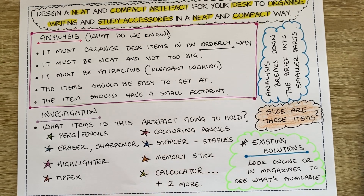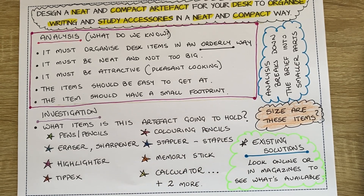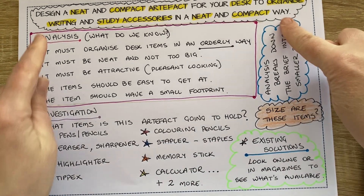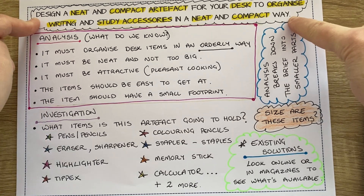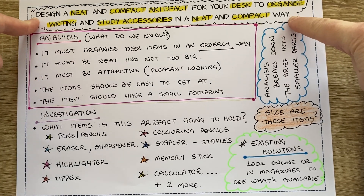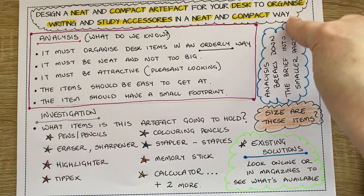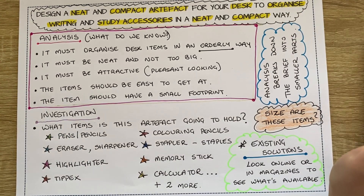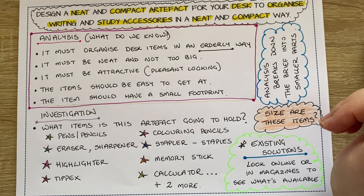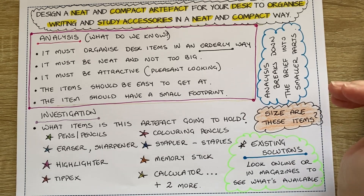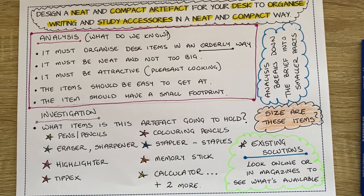You can either print out this sheet or just write out the brief: design a neat and compact artifact for your desk to organize writing and study accessories in a neat and compact way. All of these sheets that you have done, are doing, and will do — keep them all in your woodwork folder. I'm also keeping a paper printed record of everything alongside what's on Google Classroom. Okay, I'll talk to you again.